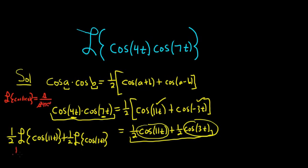So cosine has the S. So it's 1 half s over s squared plus, and then 11 squared is 121, plus 1 half.